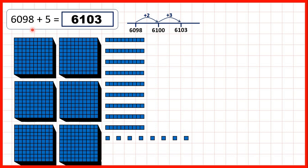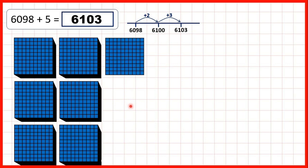Now let's take a closer look at these questions. First, we had 6,098 plus 5, and we can show what's happening with base-10 blocks. What you need to remember is that when we get 10 ones, we can exchange those for 1 ten. When we have 10 tens, we can exchange those for 100. So, starting with 6,098, we can add 1, 2, then exchange.